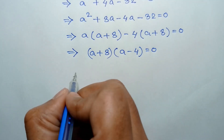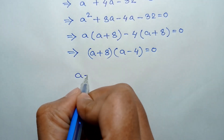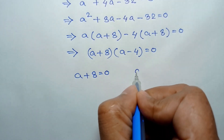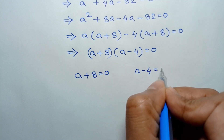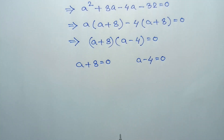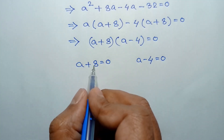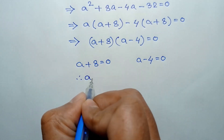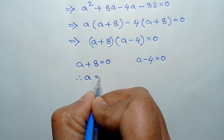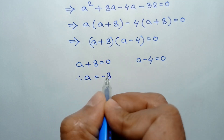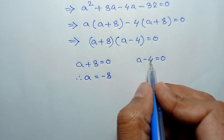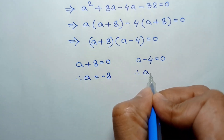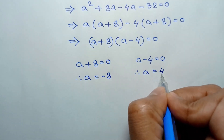So we will have A plus 8 is equal to 0, or A minus 4 is equal to 0. Taking 8 to the right side, we get A is equal to negative 8, and taking 4 to the right side, we get A is equal to 4.